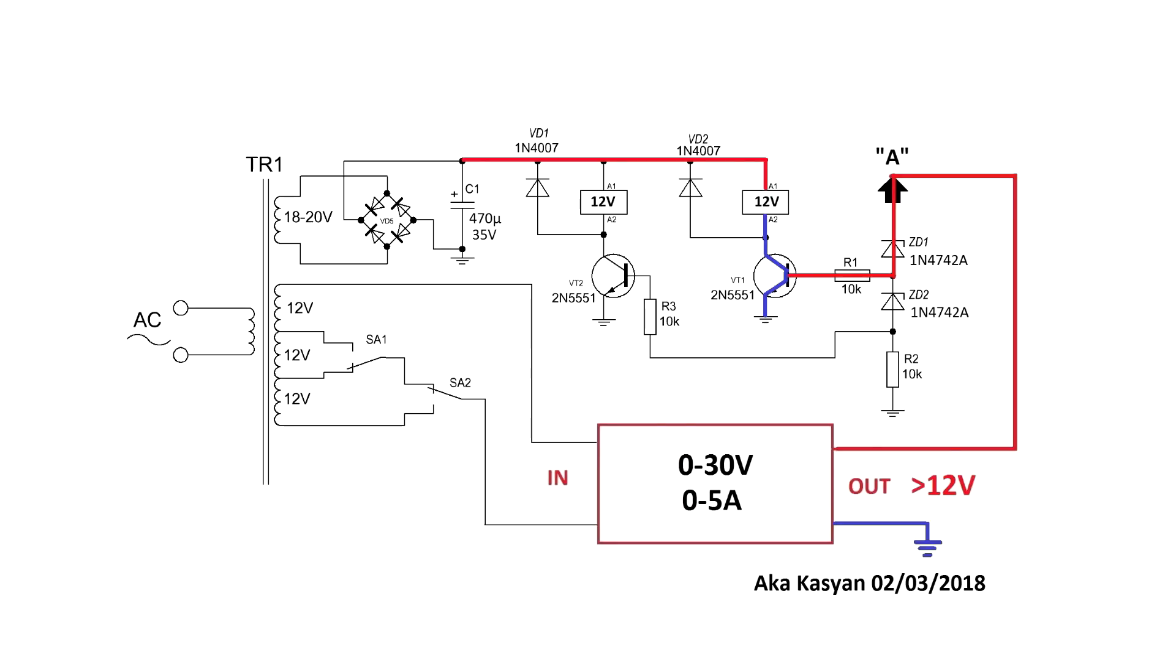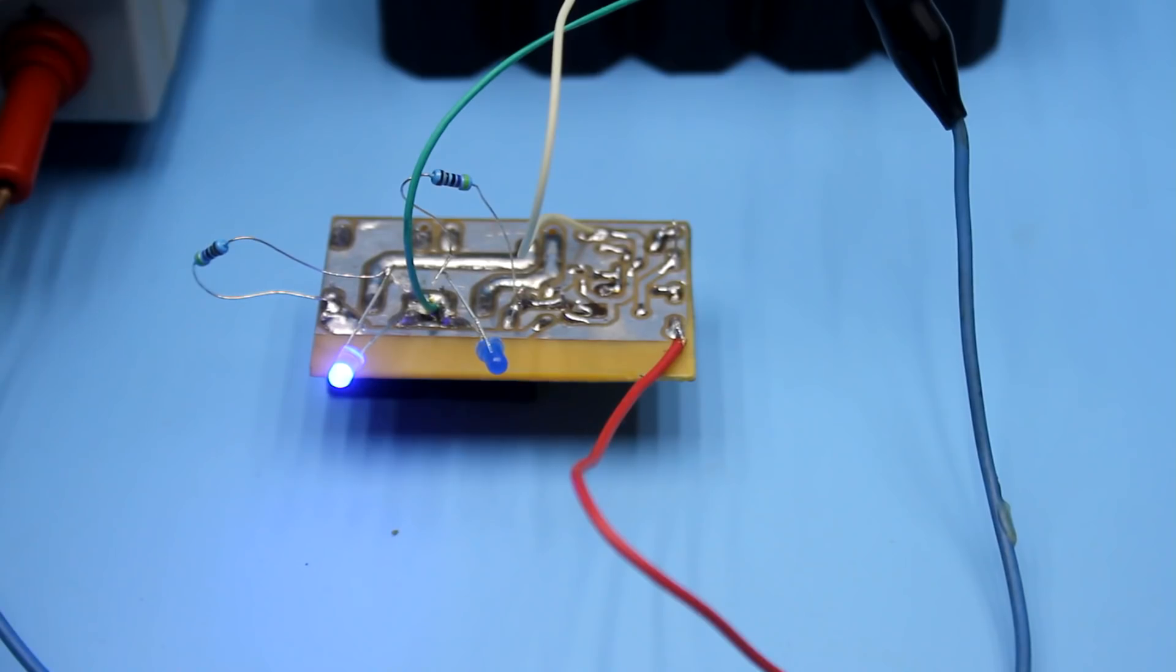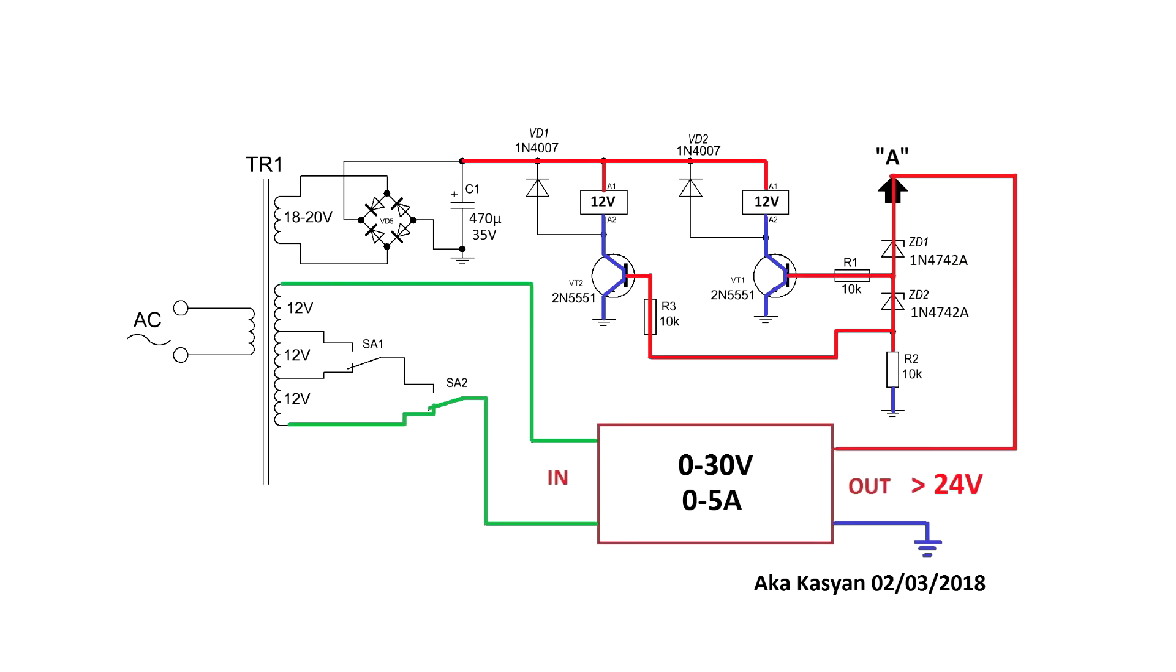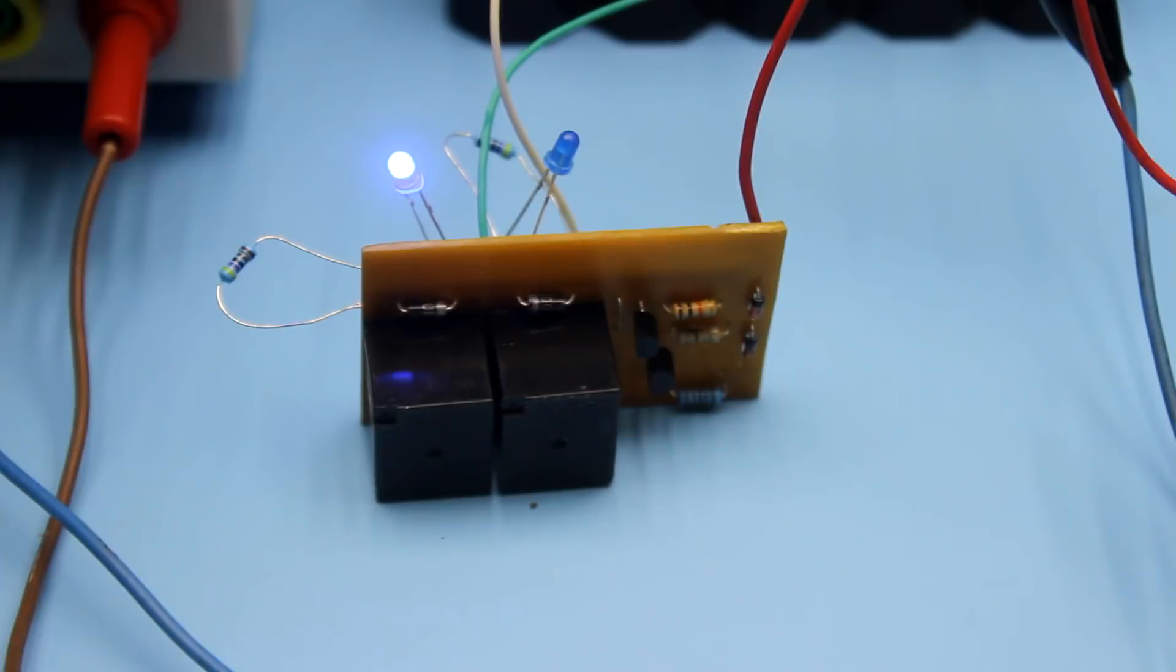Now, the input of the stabilizer is 24V. When we increase the output voltage of the power supply unit to the threshold value, which is the sum of the voltages of both zener diodes, the second zener diode works in the same way. This leads to unlocking of the second transistor and the second relay will work.